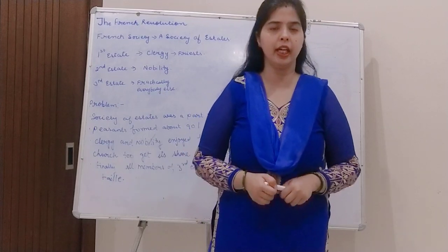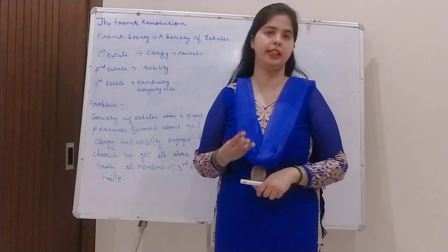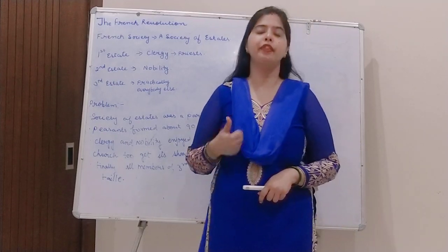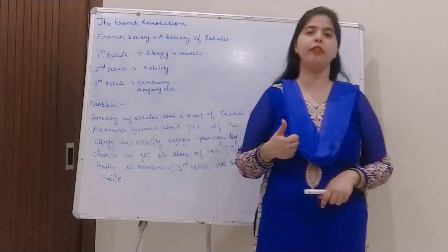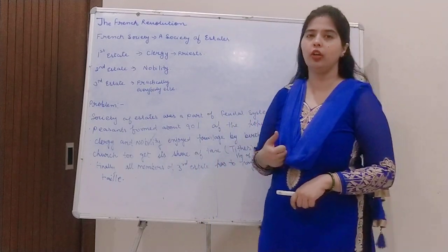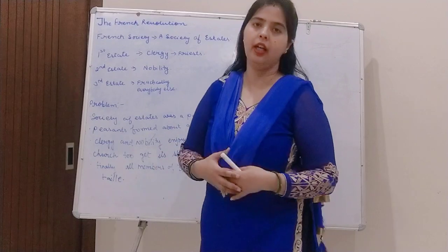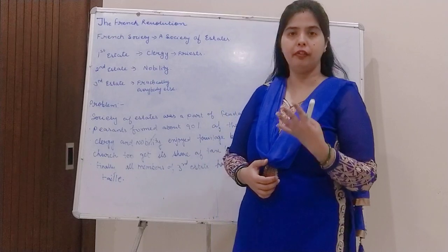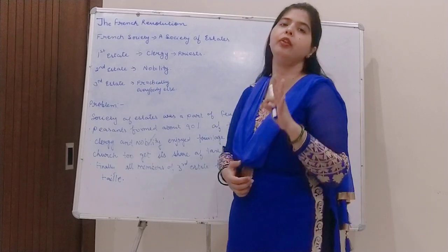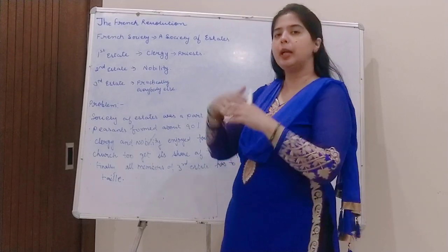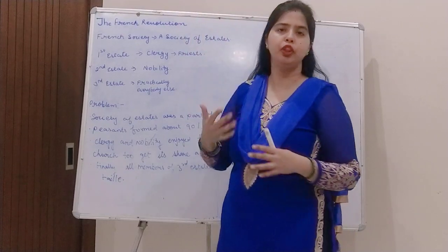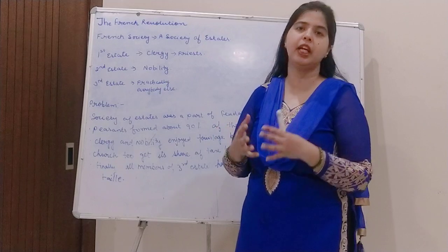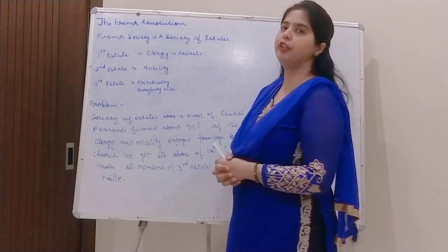The French society was divided into three estates. The first estate, second estate, and third estate. The first estate comprises of the clergy — the religious class. Just as our Hindu society was divided into four groups, French society was divided into three estates. The religious class was engaged in the first estate.